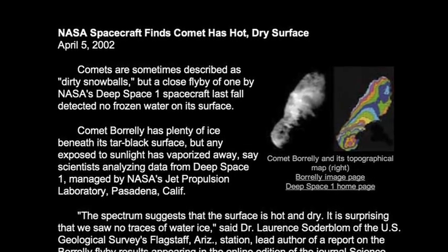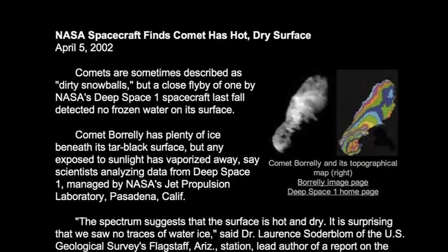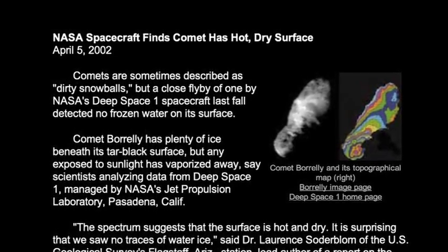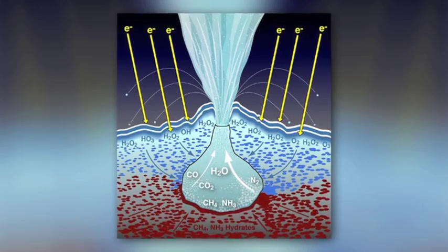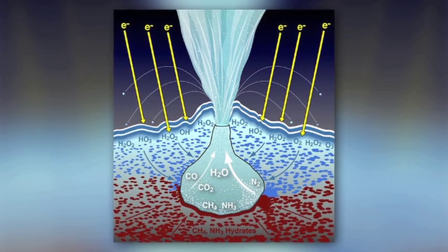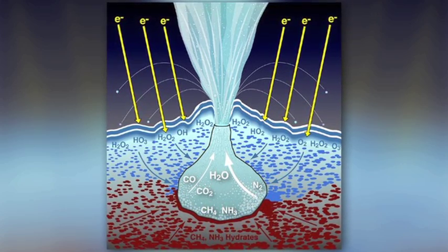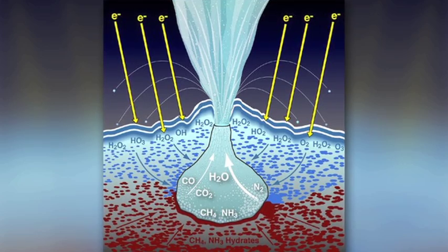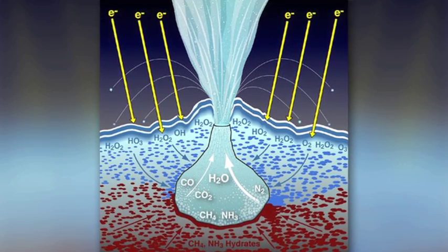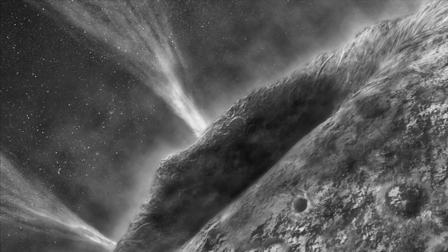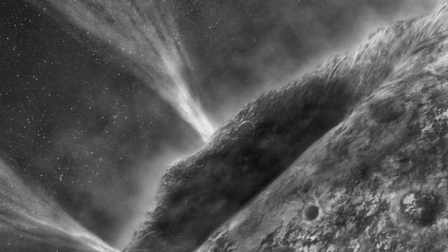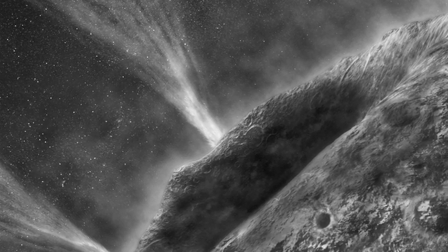From the first disclosures of dry cometary surfaces, theorists speculated that such surfaces simply hid the icy, watery content beneath the surface. They surmised that in response to solar warming, pressurized pockets of subsurface water vapor formed, exploding through the dry crust to create the observed jets of active comets.